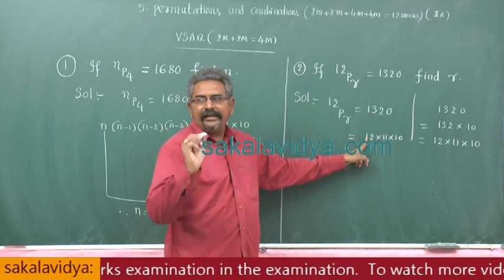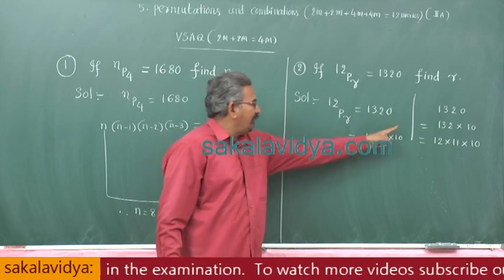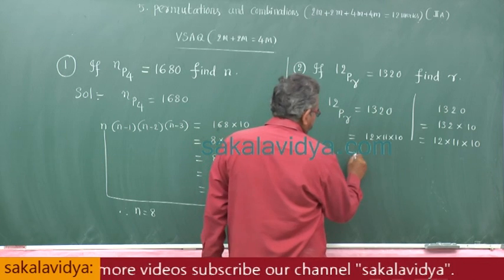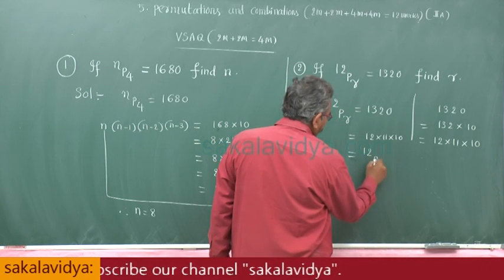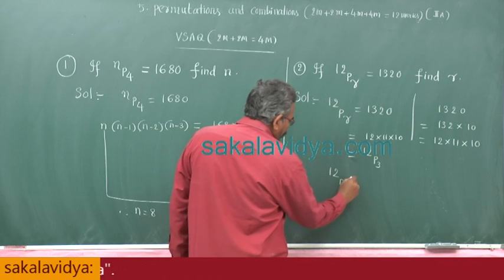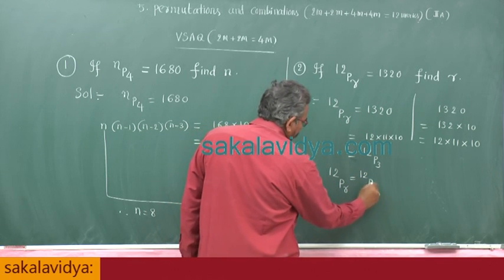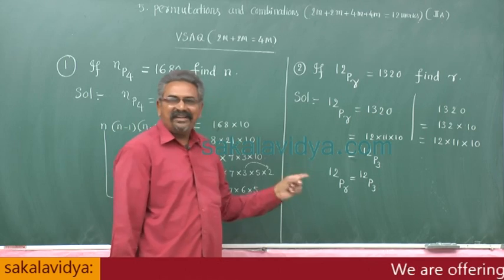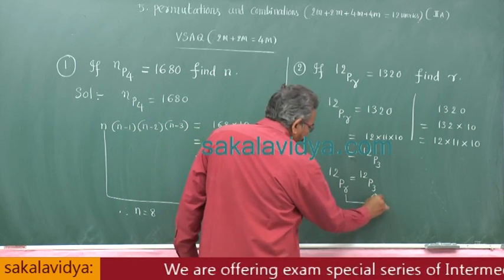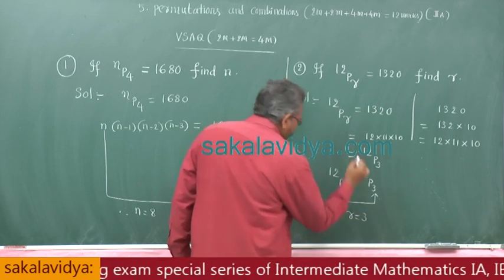That means 12 different objects are filled in 3 places. That can be written: this is 12P3. That means 12Pr equals 12P3. Now what is the value of r? Very simple, this r is 3. Therefore, r is equal to 3.